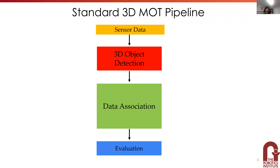This is because if we can keep track of surrounding objects and observe how they move in the past, we can probably predict their motion in the future, which can guide our decision-making during driving. Let's first do a quick overview of the basic pipeline for 3D multi-object tracking — the tracking-by-detection pipeline. Typically we have four modules: sensor data input, 3D object detection, a data association module, and finally an evaluation module.